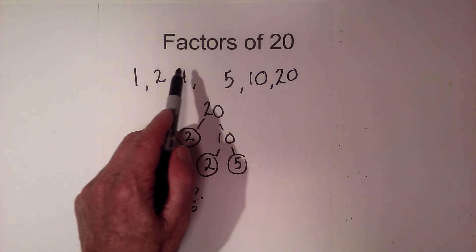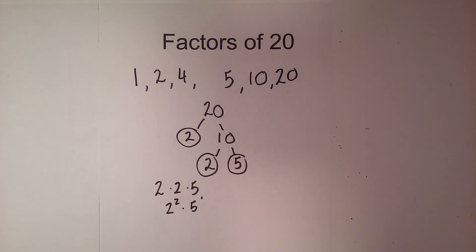So there we go, the factors of 20: 1, 2, 4, 5, 10, and 20. And the prime factors are 2 times 2 times 5. Thanks for watching, and Moo Moo Math uploads a new math or science video every day. Please subscribe and share.